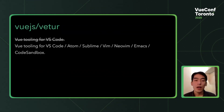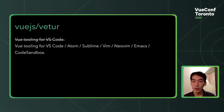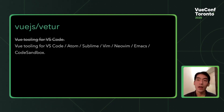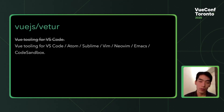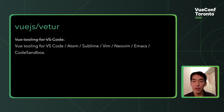Although Vetur started as Vue tooling only for VS Code, because Vetur implements something called language server protocol, the core logic of Vetur can be easily reused by other editors compatible with language server protocol, such as Atom, Sublime, Vim, NeoVim, Emacs, and others. So using one of those editors you can give Vetur a try.